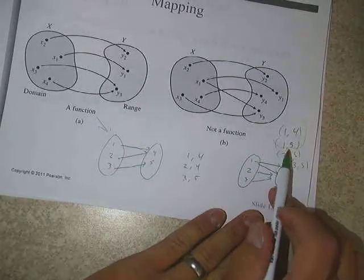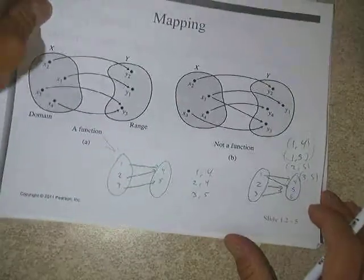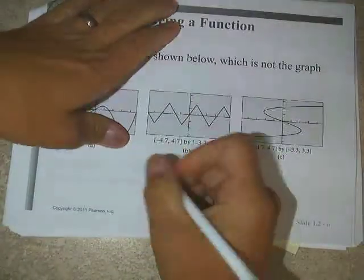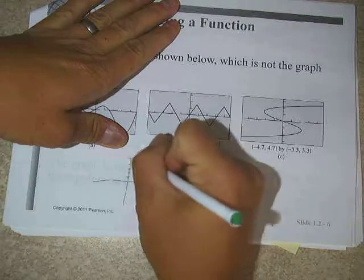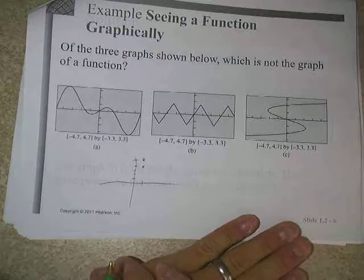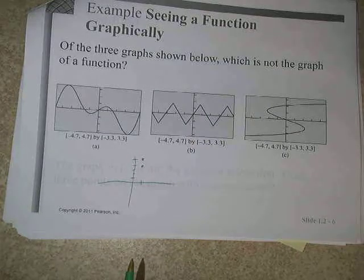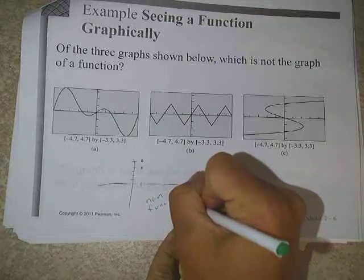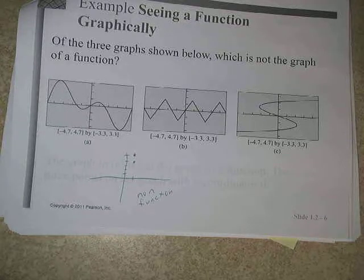Part of our work today is looking at situations and deciding whether they're a function or not. The key to look for is: is there any situation where we have one x that produces two different y values? If I had points (1,4) and (1,5), we can recognize that we have vertical points — if we have vertical points, we can automatically conclude that's a non-function.